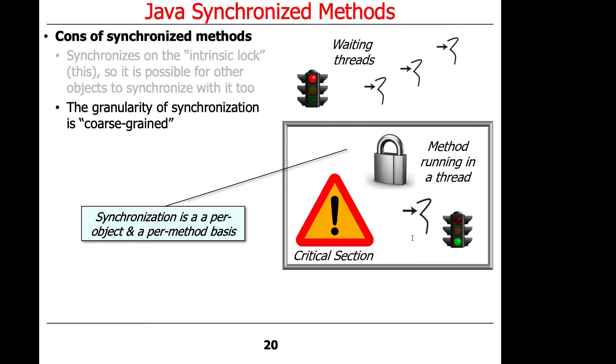So the method is the unit of granularity. And we'll see in just a little bit that could be too coarse-grained. You might have finer levels of distinction you could make within a method, thereby shrinking the critical section. And it's very important to try to keep the critical section as short as possible.